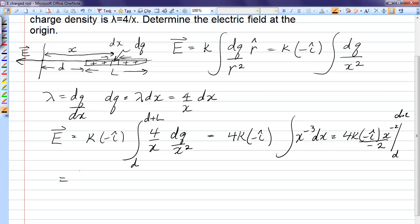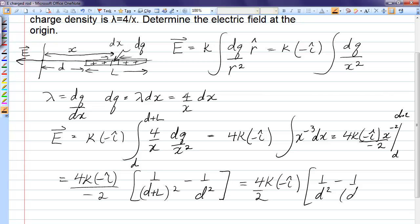Subbing in the limits of integration, I get, I'm going to leave the negative 2 down there, I get 1 over (d plus L) squared minus 1 over d squared. Now it appears that those two negatives cancel out, but in fact this quantity in brackets is also negative. So I'm just going to rearrange that so I see that it indeed does point to the left. If I flip this around, that then is the final expression.